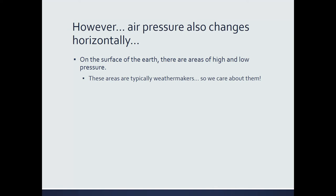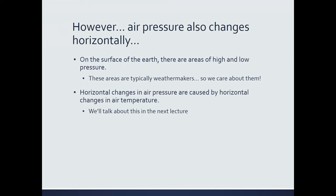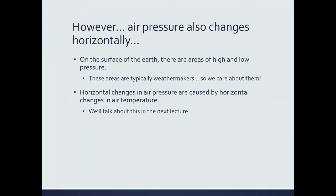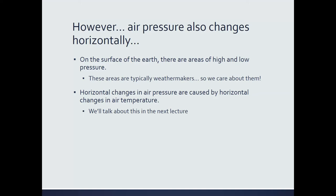As meteorologists, we really care about how pressure changes from one location to another. What causes these changes in air pressure? The main, initial cause is changes in temperature. In order to understand that, we have to construct something called the two-column model of air pressure, which we'll talk about in the next lecture. For now, since we care so much about how air pressure changes from location to location, we want to know how to measure it.